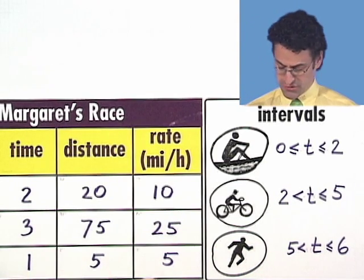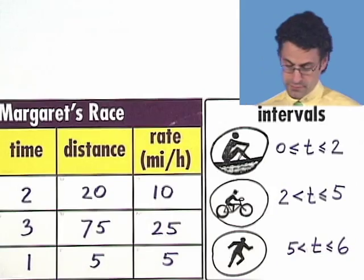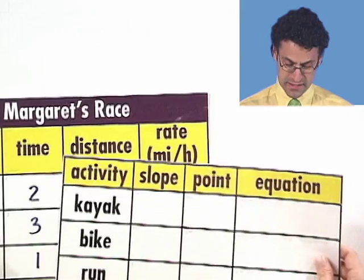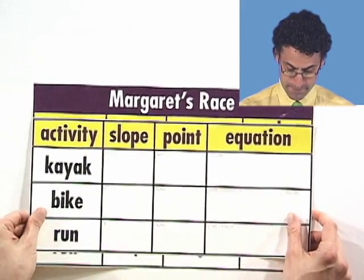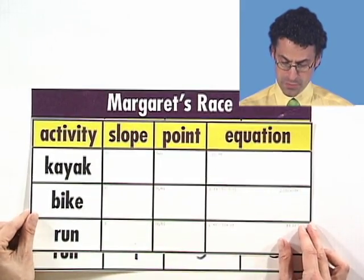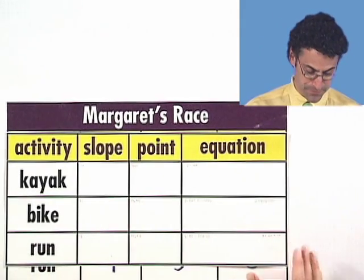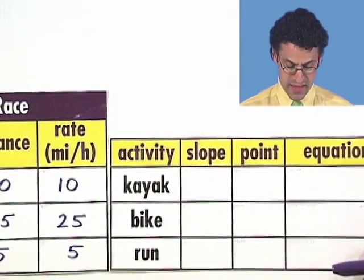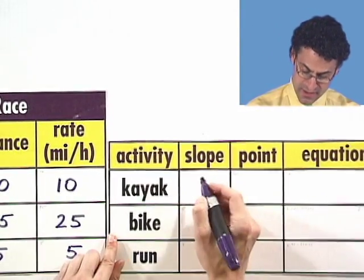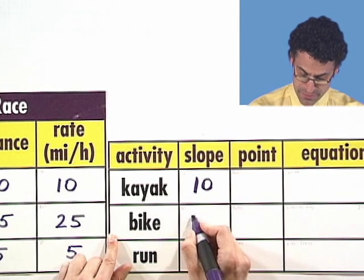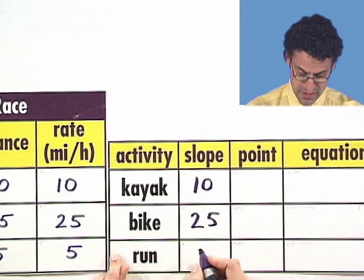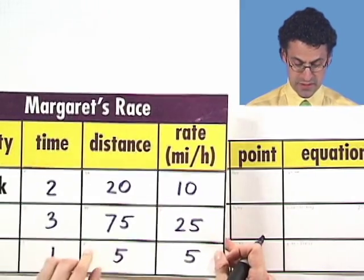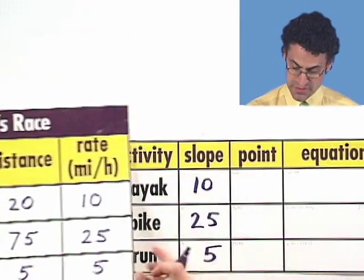So this actually tells us what the intervals are going to be. And we can now actually put all this information together and write a slope, a point, and then produce the equation. So here we go. So what's the slope? Well, that, of course, is given by the rate. So we already found that. So the slope for the kayak portion is going to be 10. For the bike portion, it's 25. And for the run portion, it's going to be 5 because we already computed the slope. It's the change in distance over the change in time. So that's good.